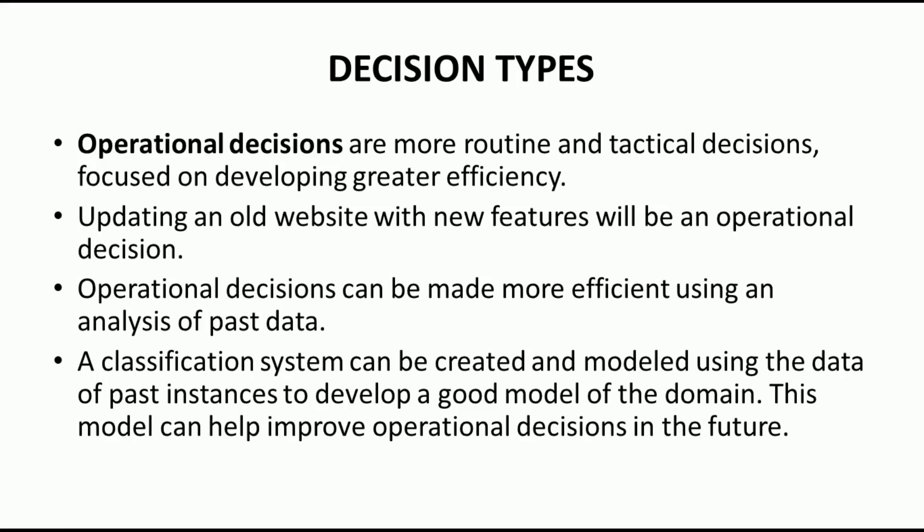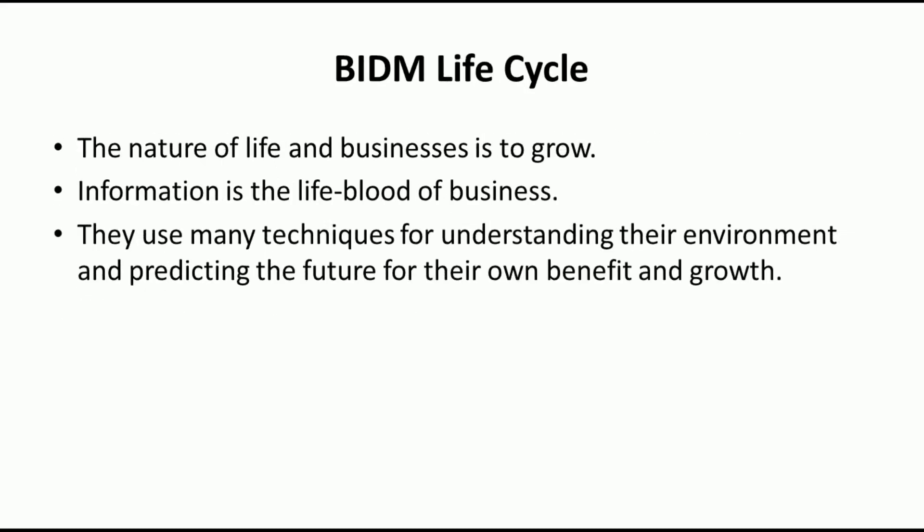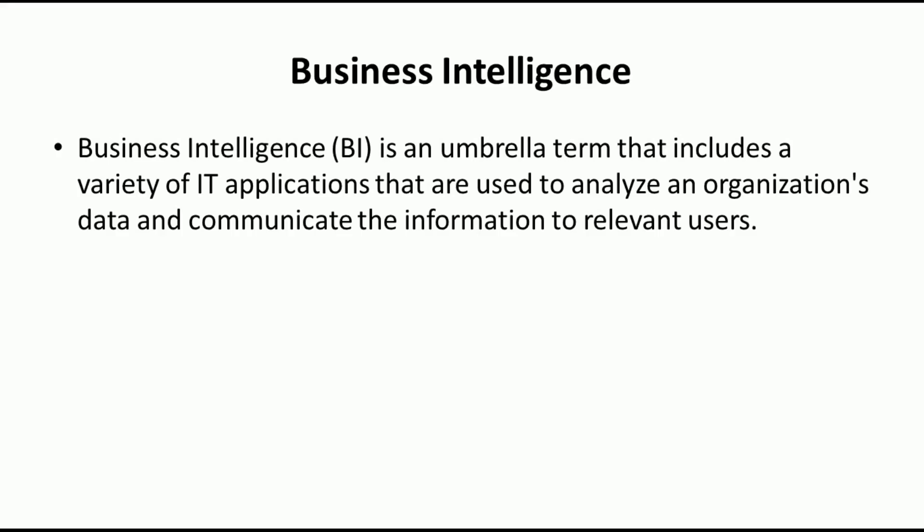So there are two types of decisions: strategic decisions (long-term goals) and operational decisions (routine, day-to-day decisions). Both can be taken with the help of Business Intelligence tools. In this video we covered what Business Intelligence is, what BI tools are available in the market, and what types of decisions we can make using BI tools. If you liked the video, please like and share, press the bell icon for regular updates, and subscribe for more videos. Thank you for watching.